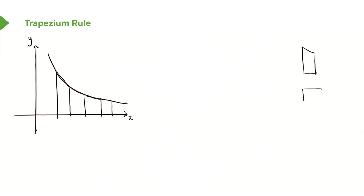So as you can see under my curve, I've split it into four trapeziums. The idea is that we find the area of each shape — let's call them A, B, C, D — and we find the area of each individual shape because we know the formula for the trapezium. Then we add it all up together to approximate the area. Remember, this is an approximation, because there are little parts that are either sticking out or underneath, which means it won't be 100% accurate. But it will give us some form of an approximation.